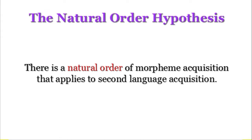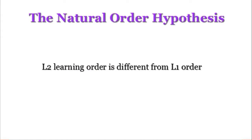Errors are signs of naturalistic developmental processes and during acquisition, but not during learning. Similar developmental errors occur in learners no matter what their mother tongue is. So we can say that there is a natural order of morpheme acquisition that applies to second language acquisition.